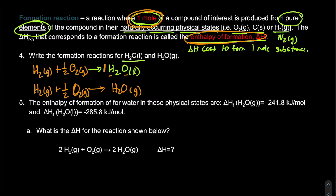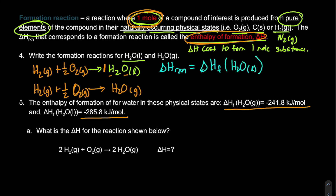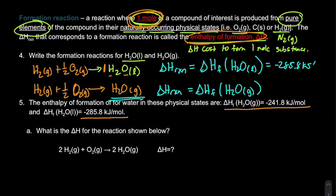This is important because these enthalpies of formation serve as building block enthalpy values. The enthalpy of formation of water as a gas is −241.8 kJ/mol, and the enthalpy of formation of water as a liquid is −285.8 kJ/mol. So the enthalpy change for the formation reaction of liquid water is −285.8 kJ/mol and for gaseous water is −241.8 kJ/mol.